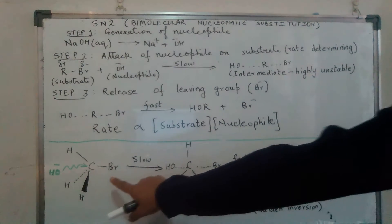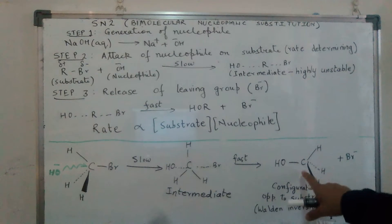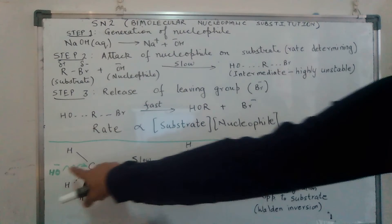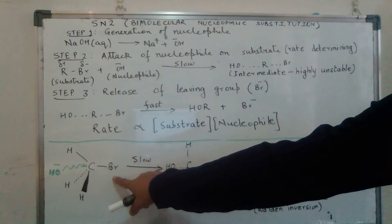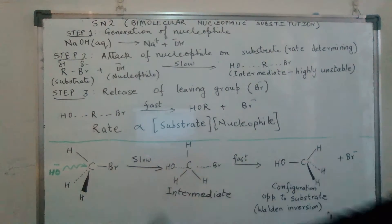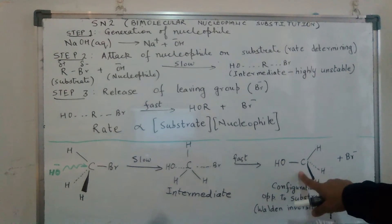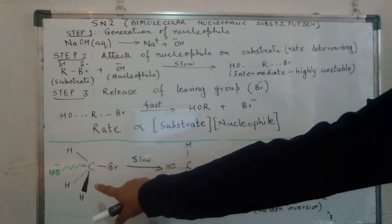If you notice over here, the configuration has changed because the nucleophile has come and attacked it from the side opposite to where the halide ion lay. Hence, the configuration of the final product is opposite to that of the initial reactant. This change in configuration is what is termed as Walden inversion.